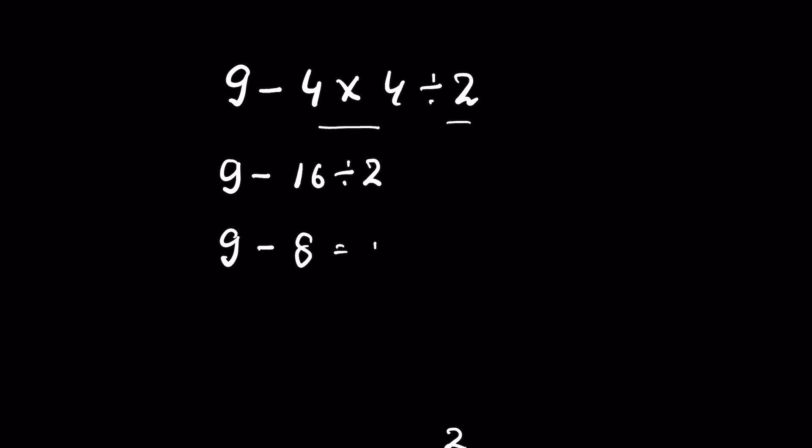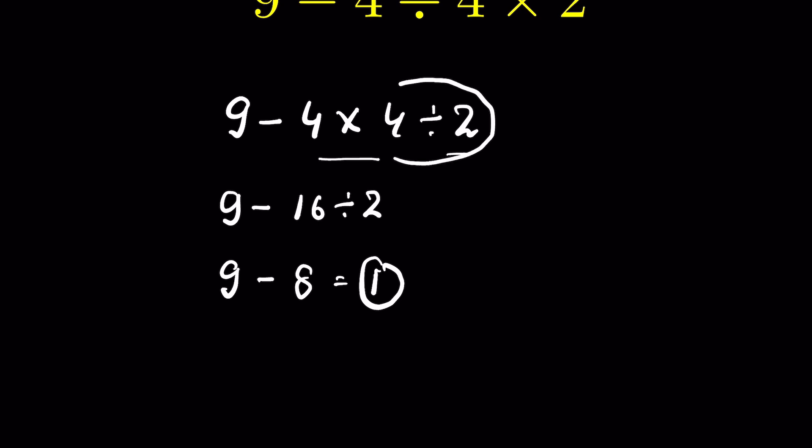So you get 1 as your answer. If you do division first, in that case, 4 divided by 2 is 2, and 9 minus 4 times 2 is 9 minus 8, giving you 1 as your answer.